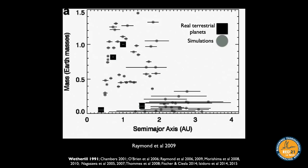Running many such simulations gives a distribution. This plot shows outcomes of many simulations with planet mass on the y-axis and orbital distance on the x-axis; squares are the actual planets and gray symbols are simulated planets with horizontal error bars showing eccentricities. There are lots of gray things near Earth and Venus — that's fine — but Mars is only about a tenth of Earth's mass, while planets forming near Mars's distance in these simulations tend to be half to a full Earth mass. This is called the small Mars problem.